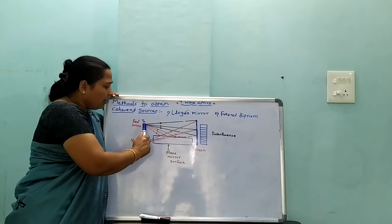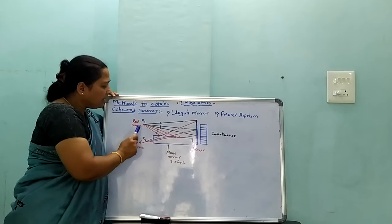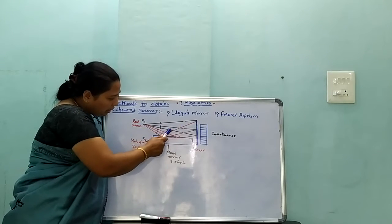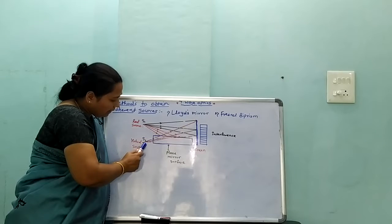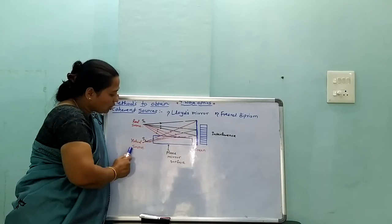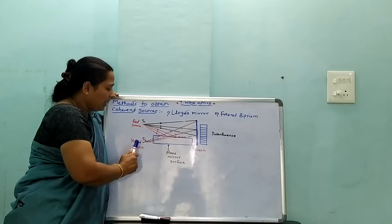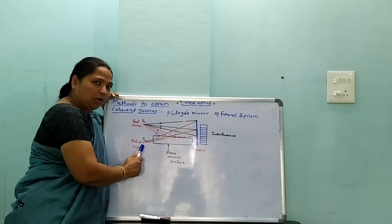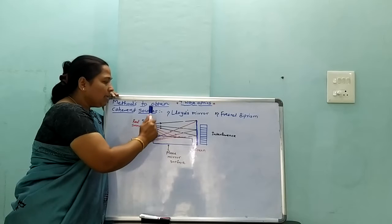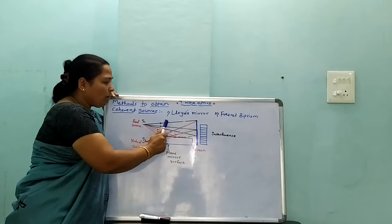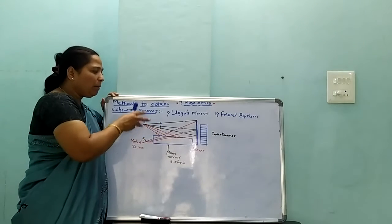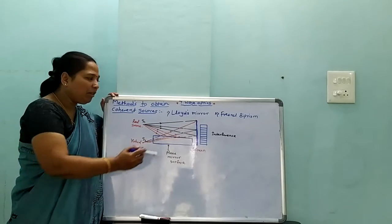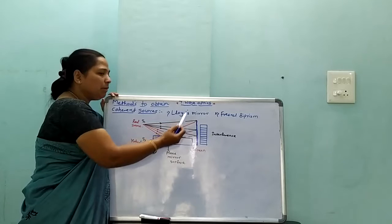Here, S1 is a real source, but after reflection those rays meet at a point and a virtual source S2 is obtained. Then S1 and S2 are two coherent sources. The two waves are superimposed on each other and they produce an interference pattern. That method is known as Lloyd's mirror method.